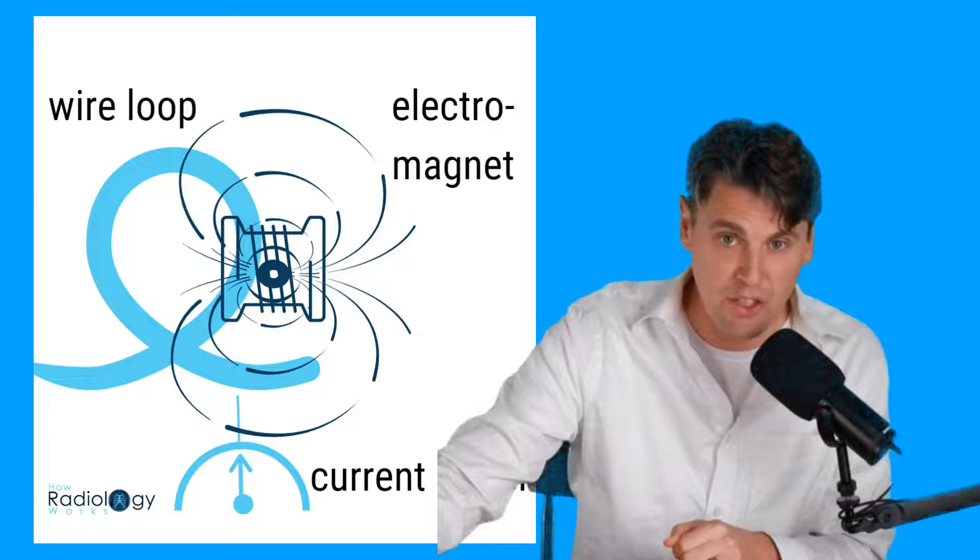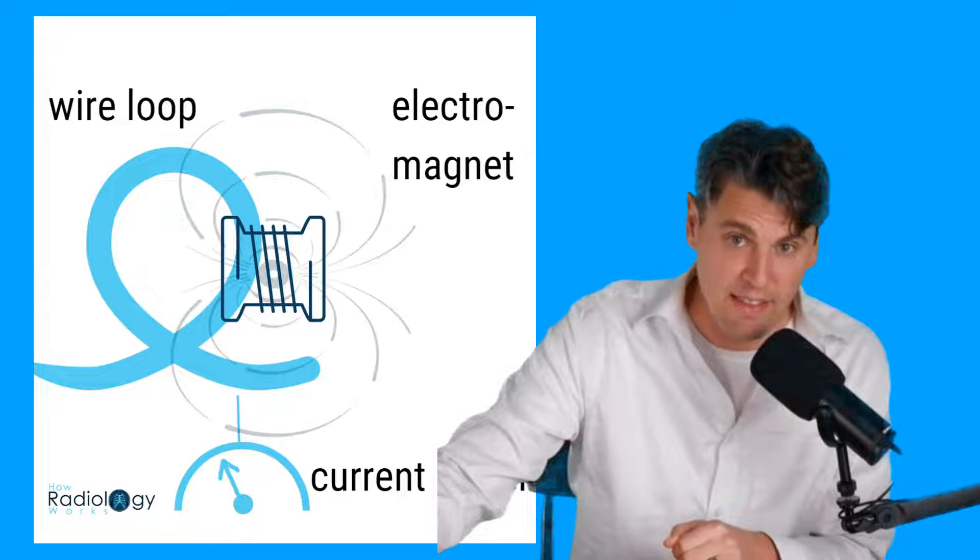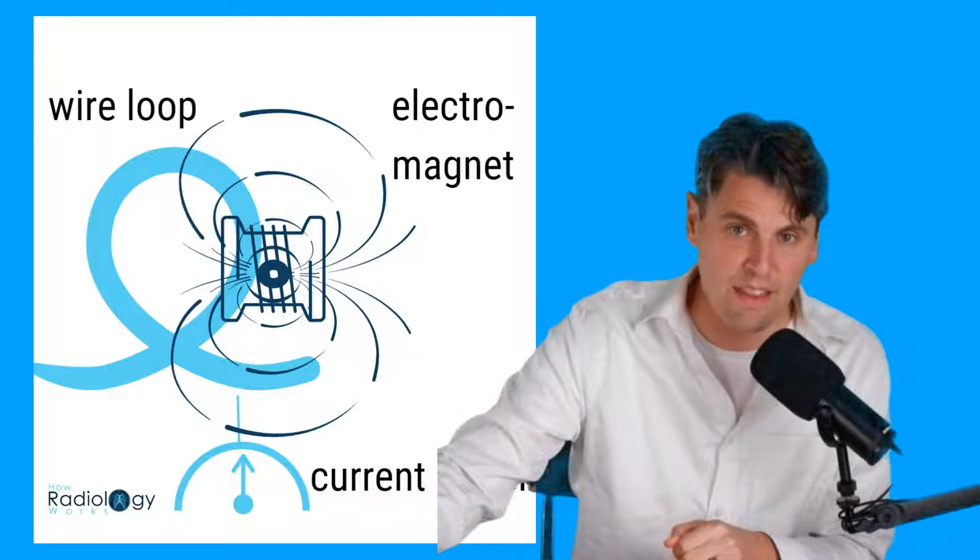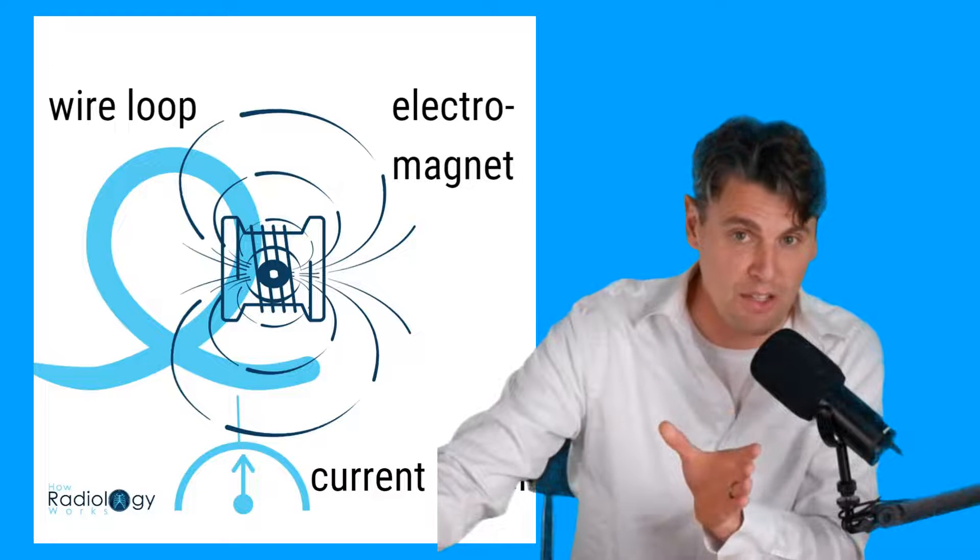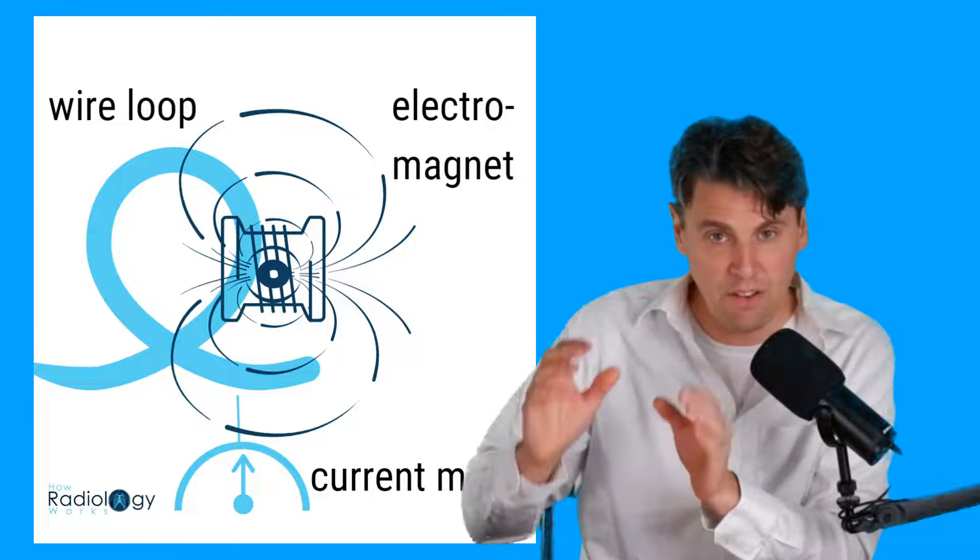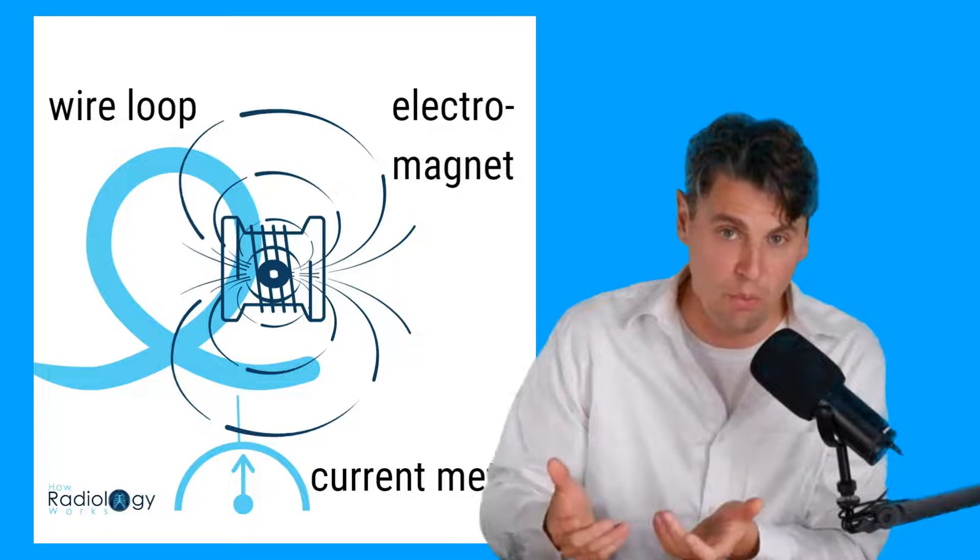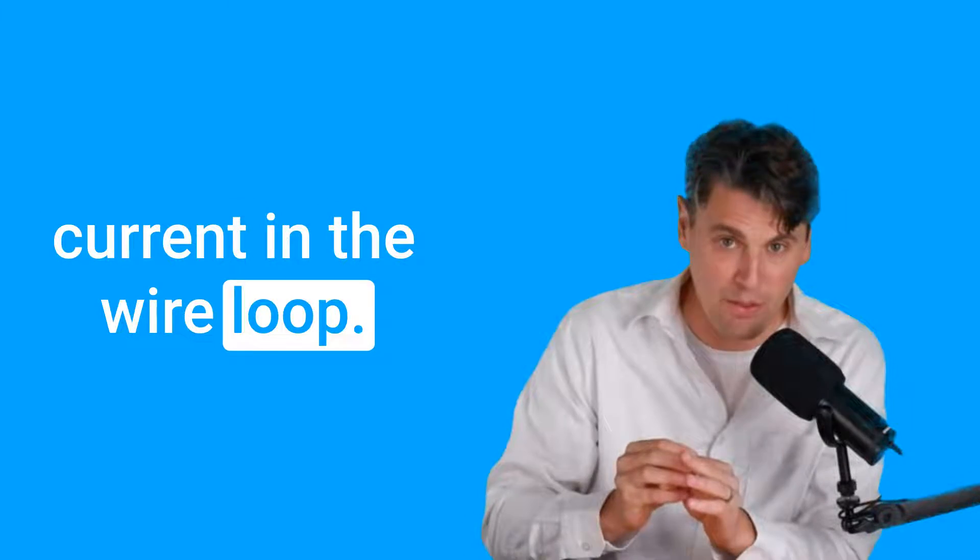If the field is changing in that electromagnet, so it's getting less intense and then it's getting more intense, so nothing's physically moving, but still the field strength is changing. And that change in the field strength can induce a current in your wire loop. Any change of the magnetic field can induce a current in the wire loop.